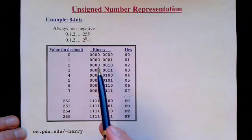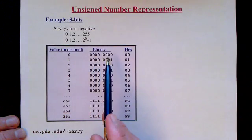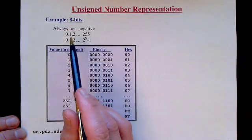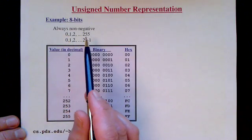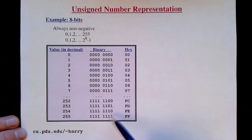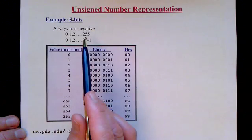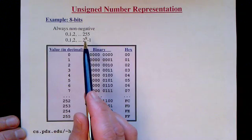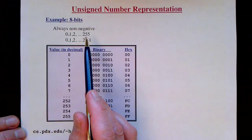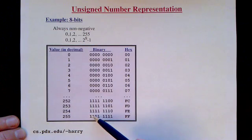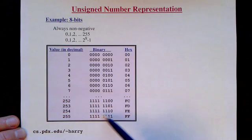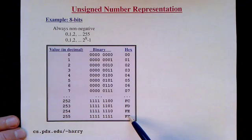First, let's focus on the eight-bit unsigned numbers we have here. They're always non-negative, ranging from zero to the maximum value. With eight bits, our maximum value is 2 to the 8th minus 1 — remember that 2 to the 8th is 256, so our max is 255. The maximum value with unsigned representation is always a bit pattern of all ones in binary or all F's in hex.